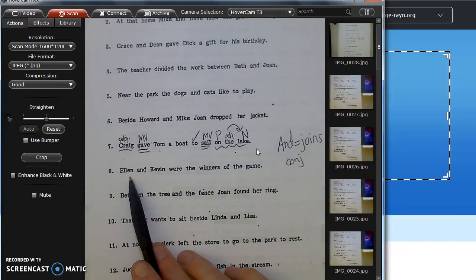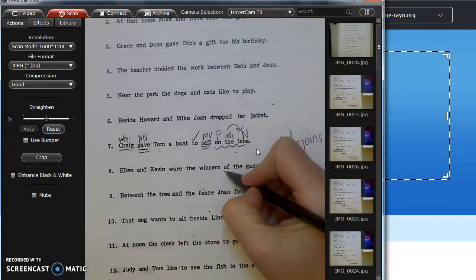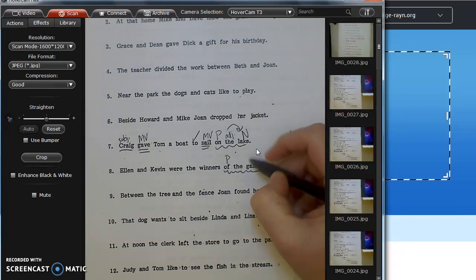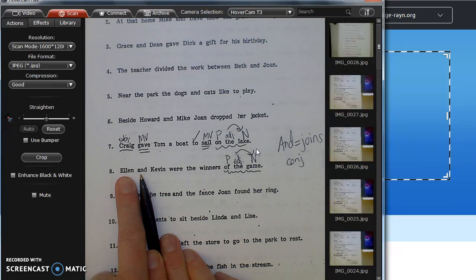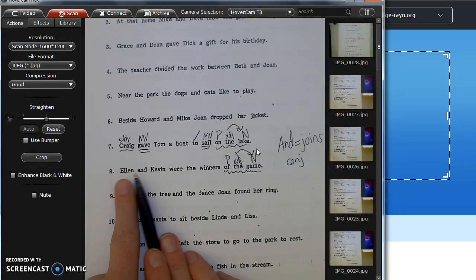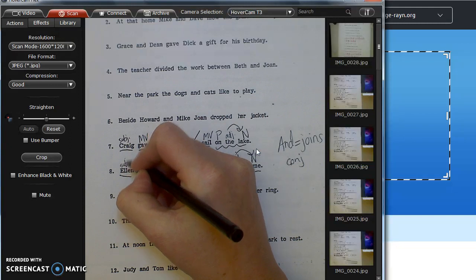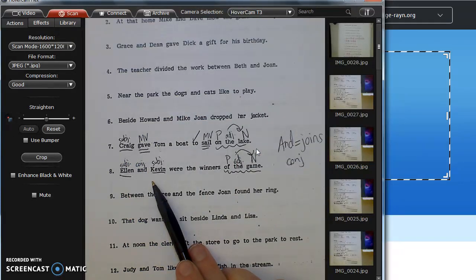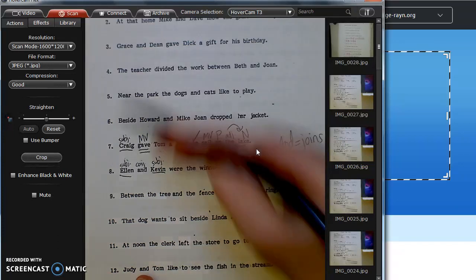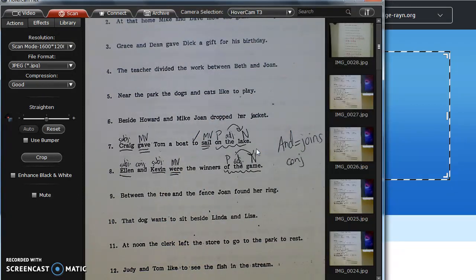Number 8. Ellen and Kevin were the winners of the game. I don't see any twos to check, but I do see of, and I know of is a preposition, so of the game is a prepositional phrase. Don't forget your arrow. Who or what is doing the action? So I see Ellen, but then I see the word and, and and joins two things, so it's joining the two subjects, Ellen and Kevin. So we're going to underline Ellen, we're going to underline Kevin. They're both the subject, and they were both joined by the conjunction and. Now, what did Ellen and Kevin do? Ellen and Kevin were, that is the past tense form of the word to be. It's not really an action, but it still is a verb.